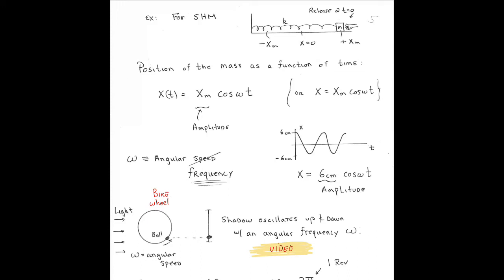Here's our mass on a spring. You're going to release this at time equals zero, and this thing's going to oscillate back and forth between plus x-max and minus x-max. We're going to let this thing go. I go click, and it's going to go one, two, three, four, and so on.